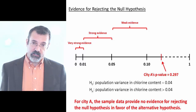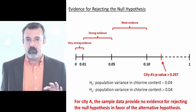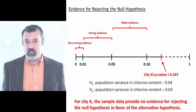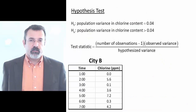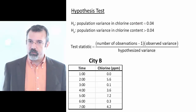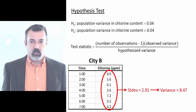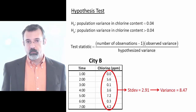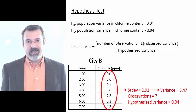The null hypothesis is that the population variance of chlorine is appropriate, so we conclude there is no evidence that the water in city A is unsafe. Now let's look at city B. The standard deviation of chlorine in city B is 2.91. Squaring that gives a variance of 8.47. We have 7 observations and a hypothesized variance of 0.04.